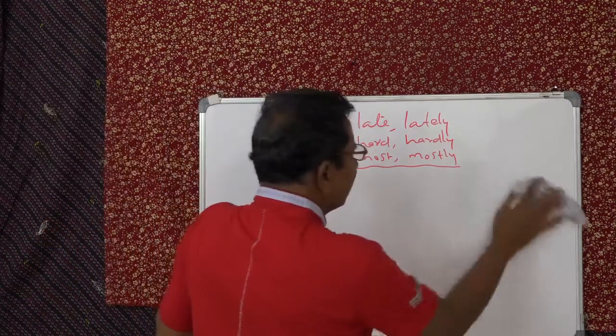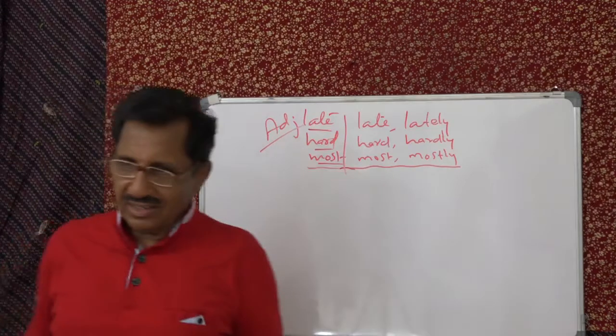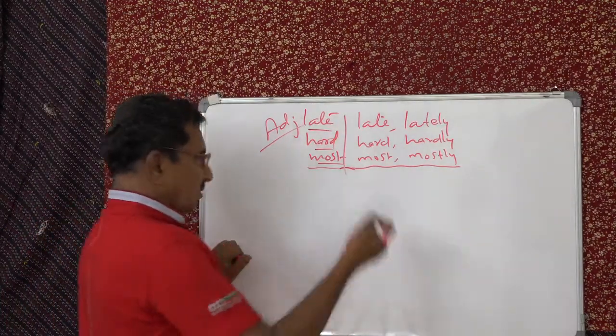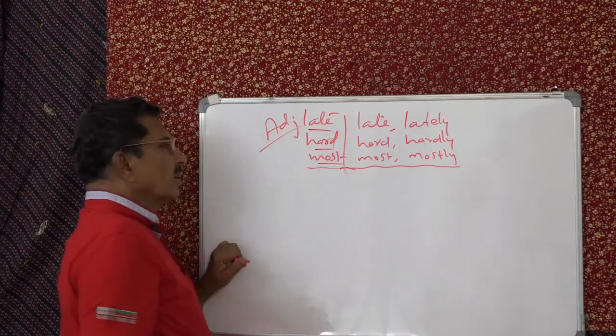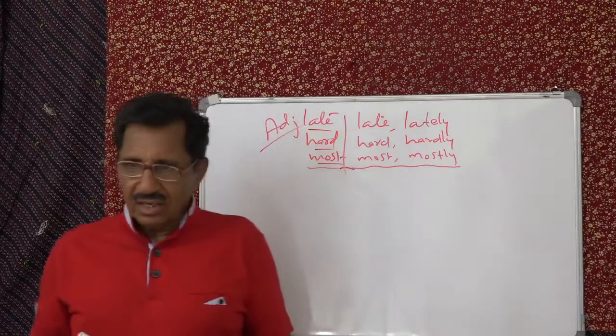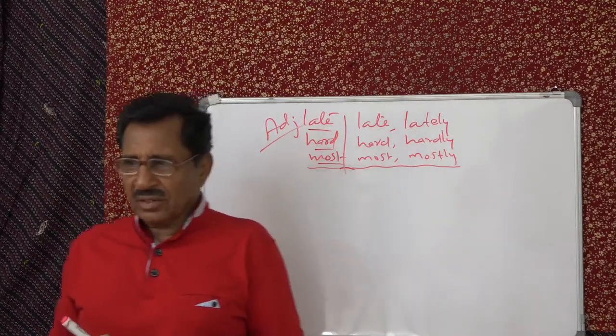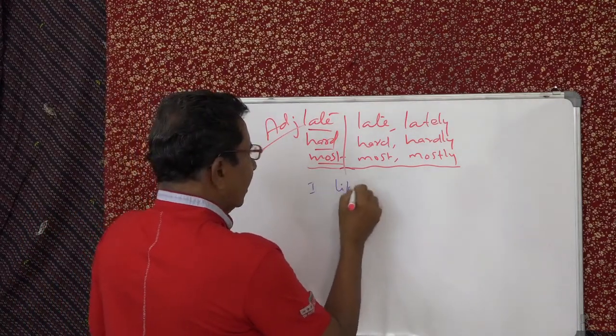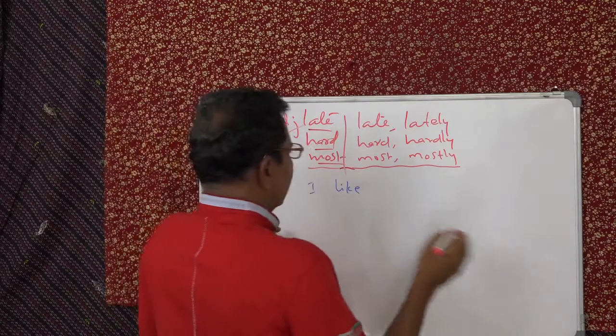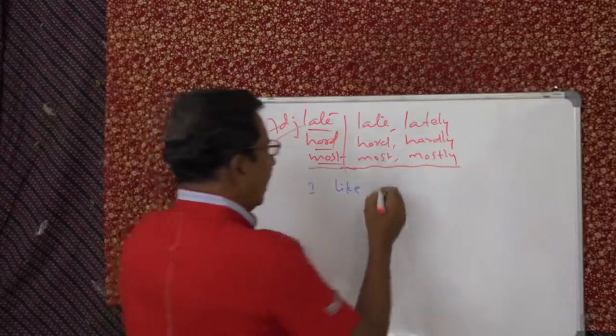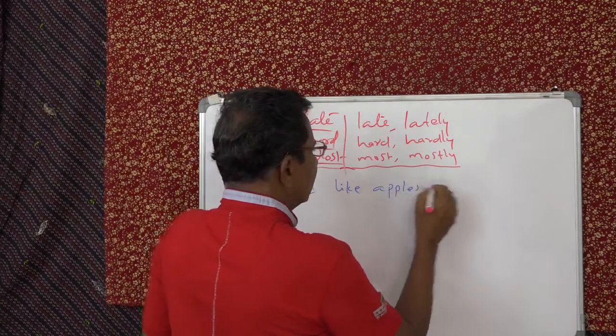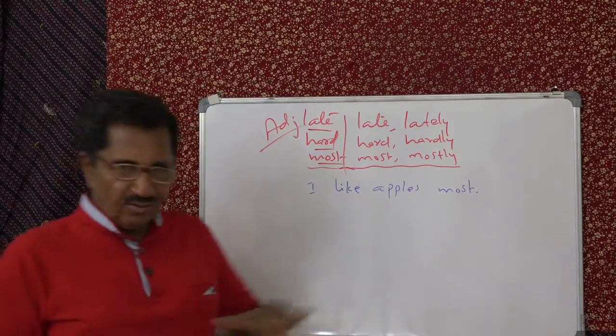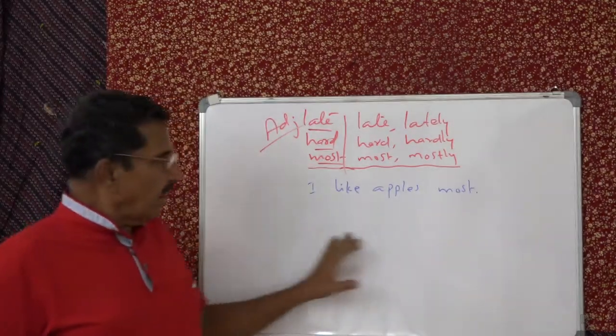And the rest is most. Most is adjective, we have seen. And most, one, first adjective means, we can say like this. You can say now, I like apples most. That means to a great extent, the degree, you know, the degree level. So I like apples most.